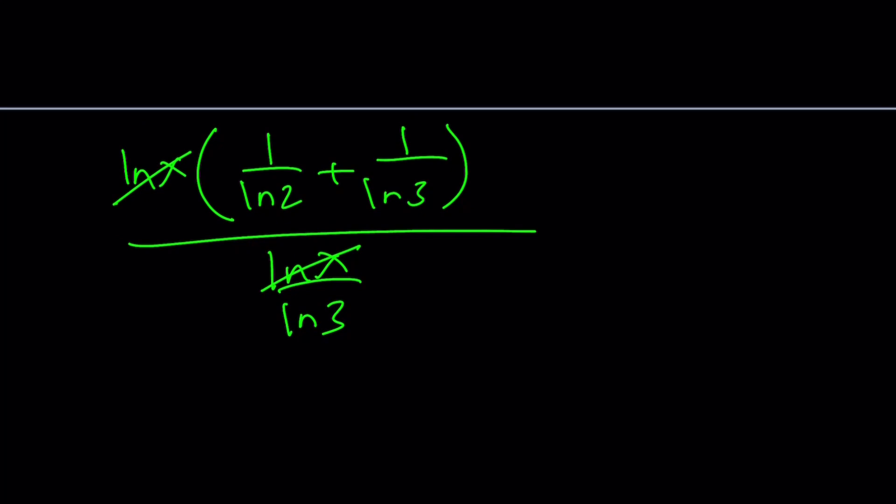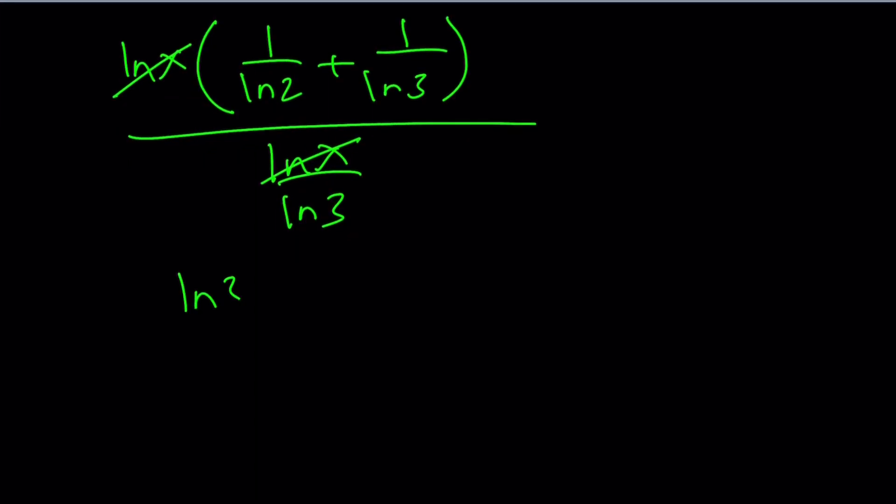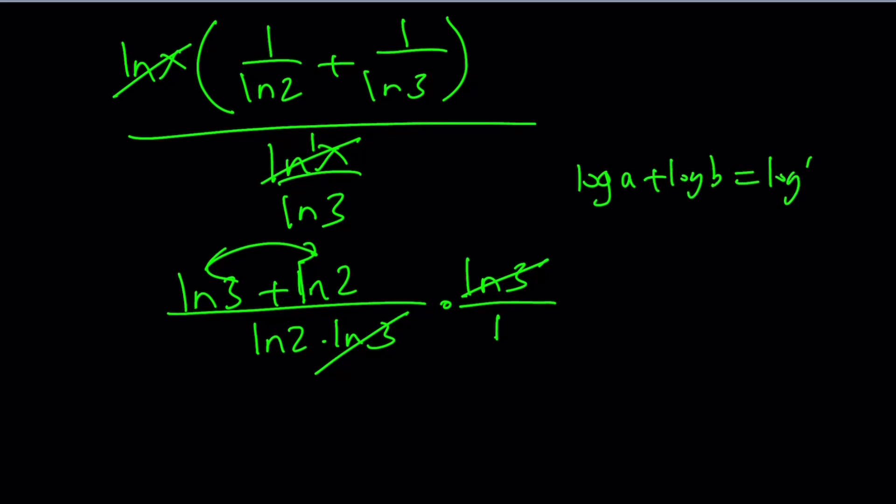Now we can make a common denominator here. ln 3 plus ln 2 divided by ln 2 times ln 3, and then this one is 1 over ln 3. We're going to flip and multiply ln 3 over 1. ln 3 cancels out. We end up with ln 3 plus ln 2 over ln 2. Now we can combine these two things using the property of logs. If you have log a plus log b, you can write it as log a times b. So we can write ln 3 plus ln 2 as ln 6, and divide it by ln 2. So that is the exponent.